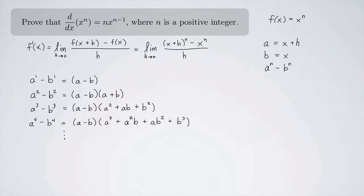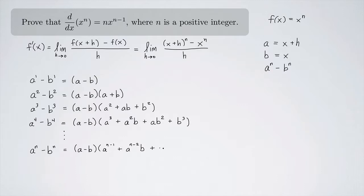If we keep going and generalize, a to the n minus b to the n should equal a minus b times a to the n minus 1 plus a to the n minus 2 times b plus dot dot dot plus a times b to the n minus 2 plus b to the n minus 1. The question is: does this actually hold?